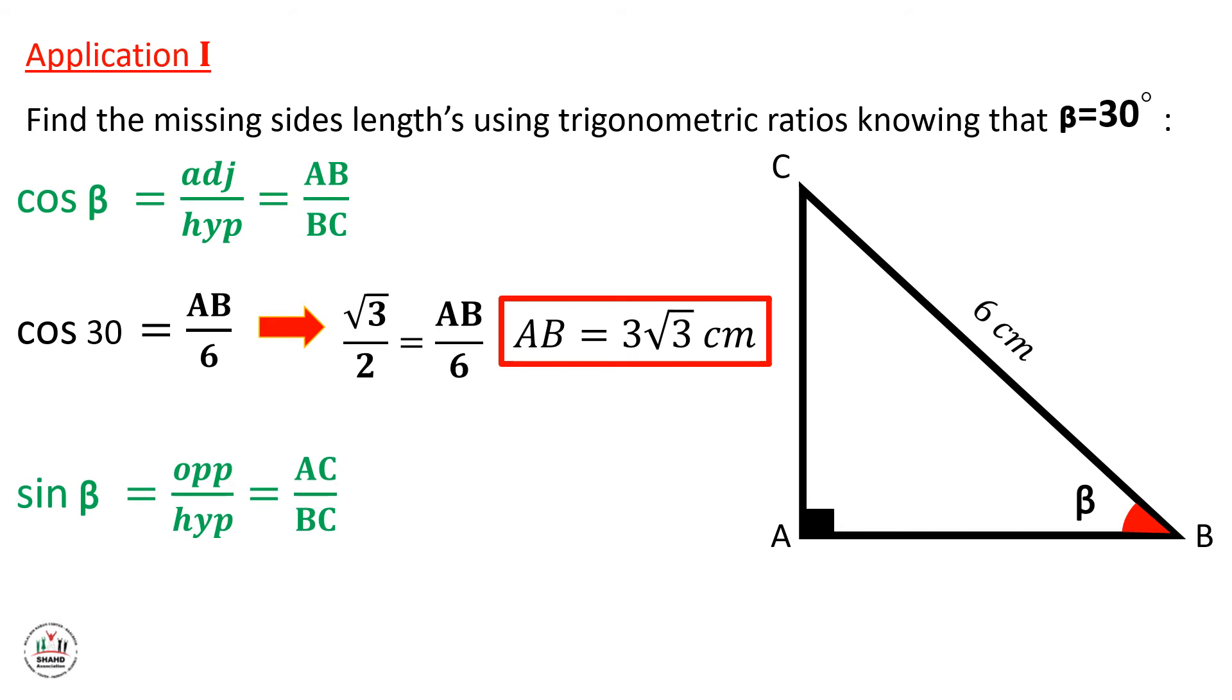Sine beta, which is equal to opposite over hypotenuse. And the opposite side here is AC. We need to find it, and we have the side BC. So again, we need to substitute the given in the formula. So sine 30, by using calculator you can find it, equals one half, equals AC over 6. Again we can do cross multiplication to find AC. So AC will be equal to 3 cm: 6 times 1 over 2, which is equal to 3 cm.